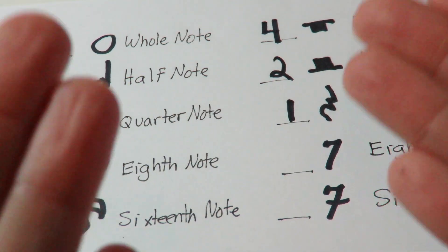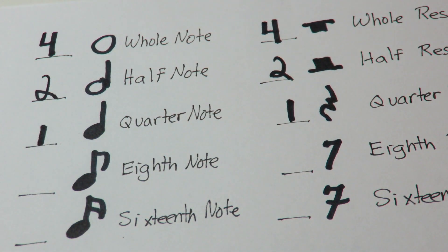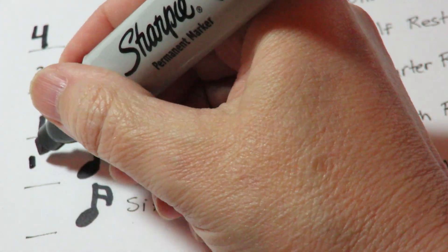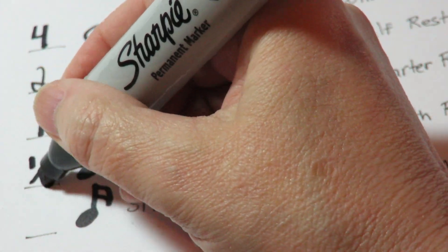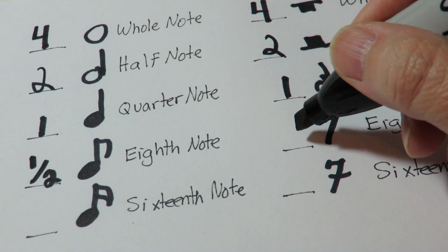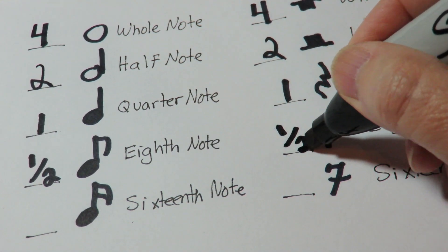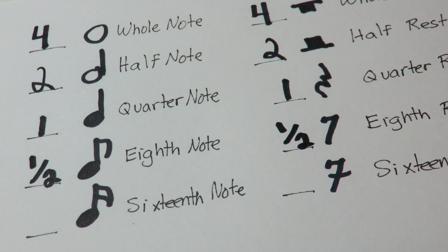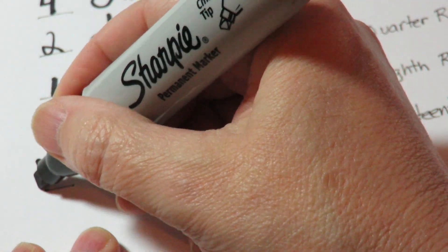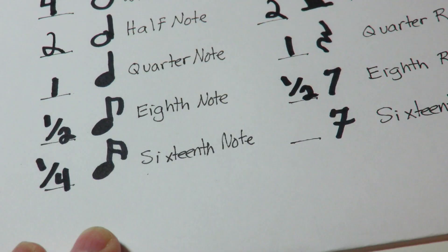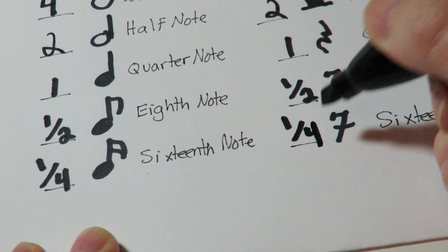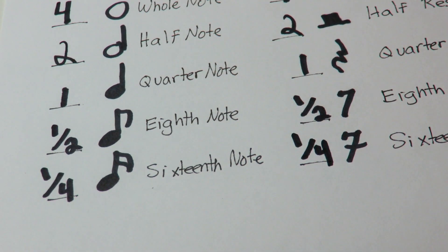Eighth notes get one half of a beat's worth of sound — in other words, played for one half of a beat. Eighth rests get one half of a beat of silence. Sixteenth notes get one fourth of a beat, and sixteenth rests get one fourth of a beat.